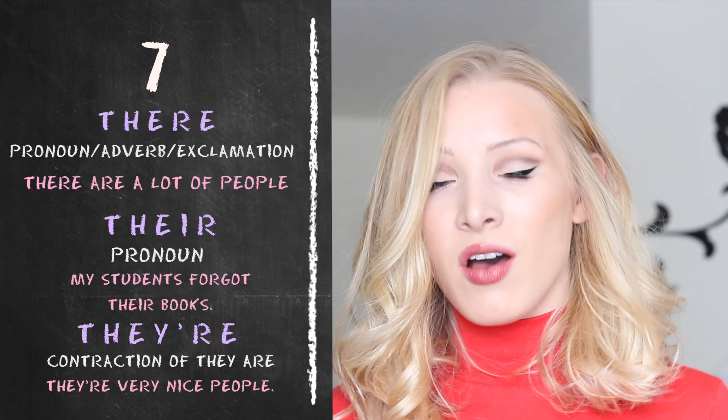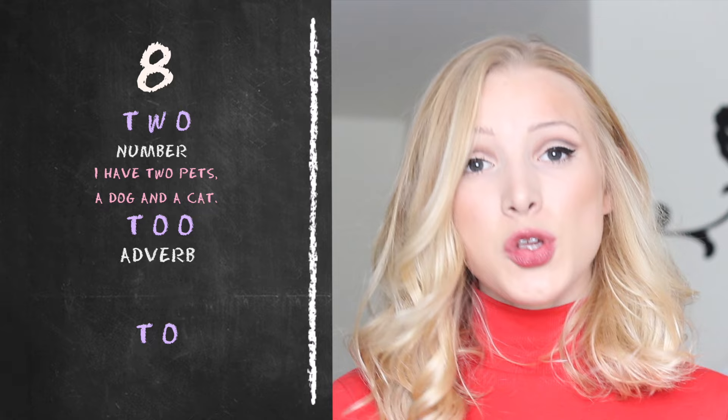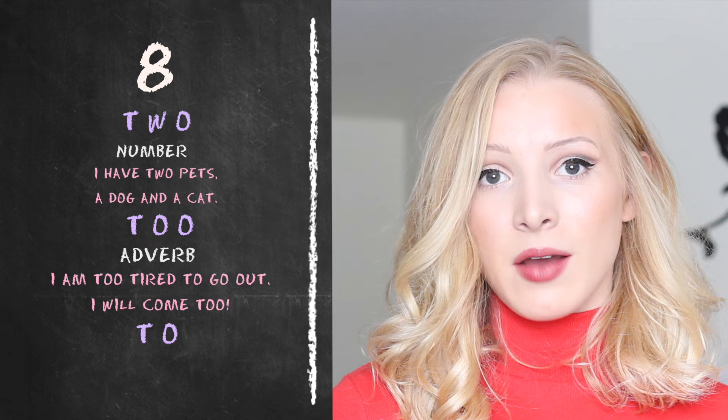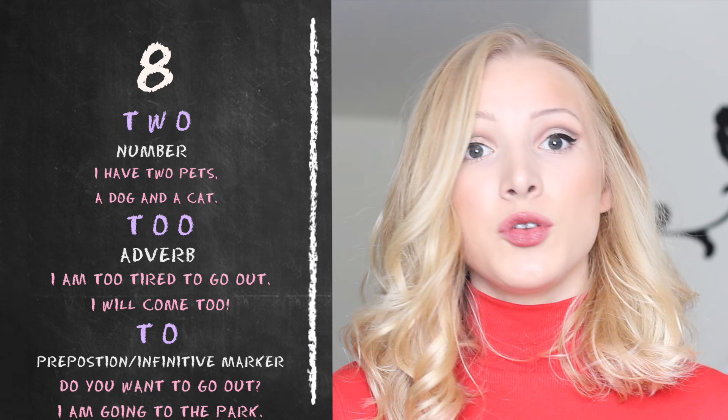Then we have 'two,' 'too,' and 'to.' Firstly, 'two' is the number two — 'I have two pets, a dog and a cat.' Then 'too' can mean excessively or also — 'I am too tired to go out,' or 'I will come too.' The final 'to' can be used to indicate an infinitive — 'Do you want to go out?' — or as a preposition: 'I am going to the park.'